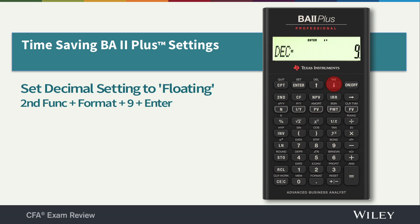Now press the down arrow four times and take a look at the setting on my calculator right now: CHN. That means it's the chain order of operations. So whatever you type into your calculator — one plus two times three — the answer will come out to be nine. It simply follows the order of the keystrokes you entered. For the CFA exam we'll be adding things in the numerator, then dividing and working with a lot of exponents, especially in discounting models. CHN is the least helpful format setting for the CFA program.